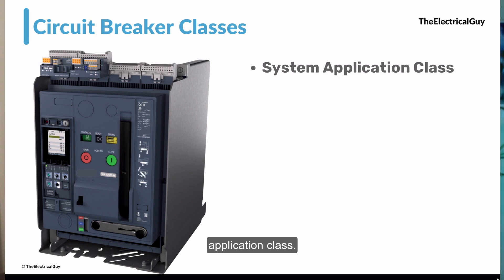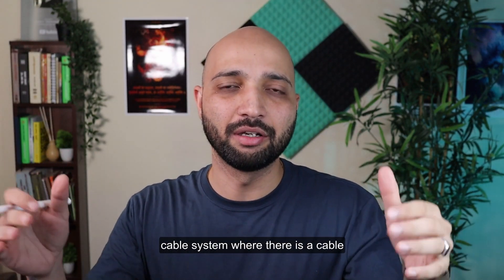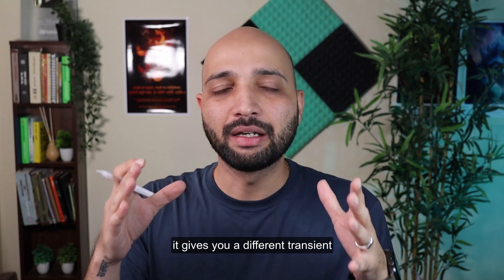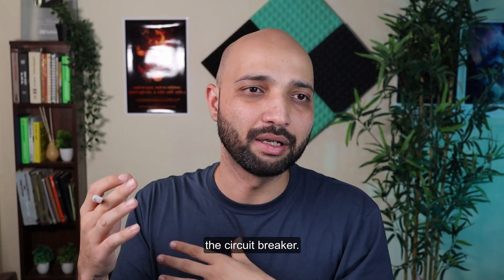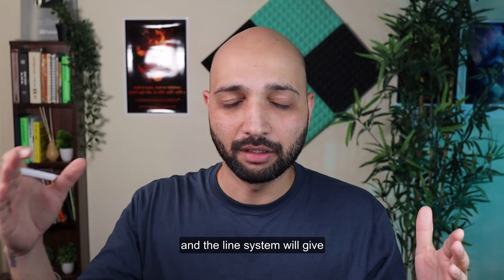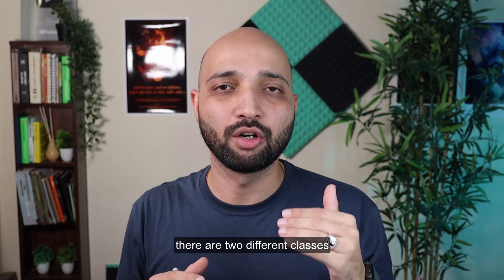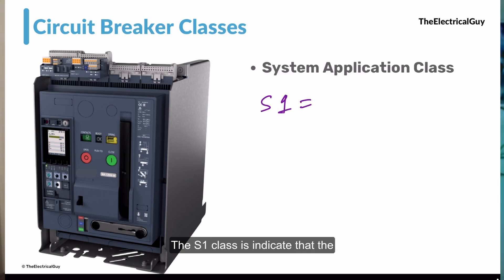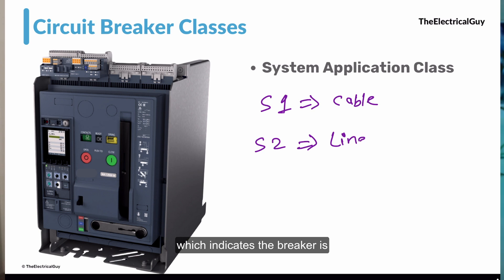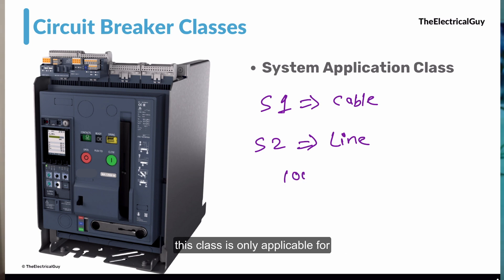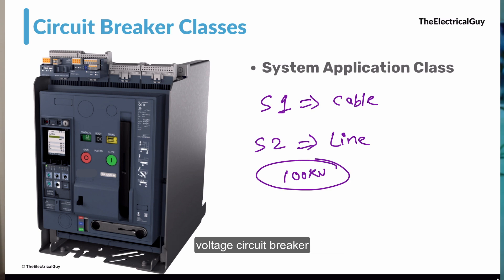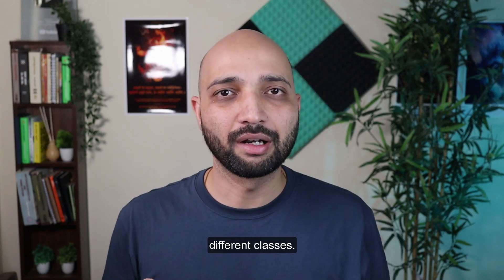The last class is the specific system application class. Circuit breakers can be used in cable networks or line networks, and each gives a different transient recovery voltage across the breaker. The IEC standard defines different values for each scenario. S1 class indicates the breaker is suitable for cable networks, and S2 class indicates suitability for line networks. Importantly, this class is only applicable for breakers of 100kV and below — not for high and extra-high voltage circuit breakers.